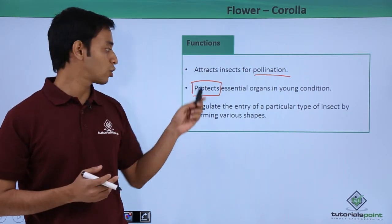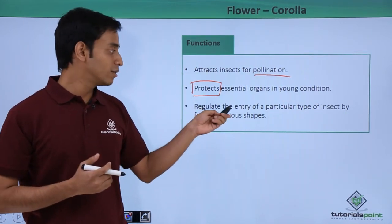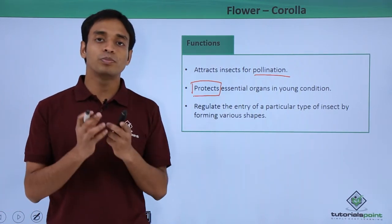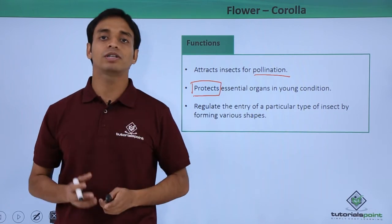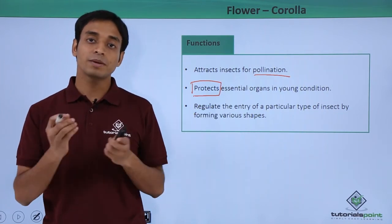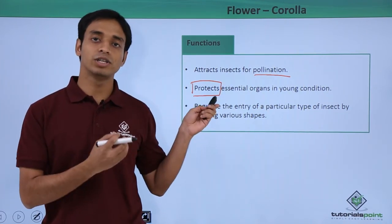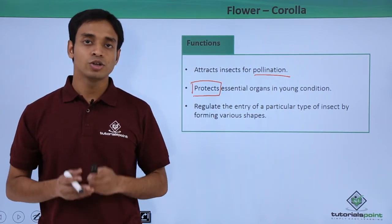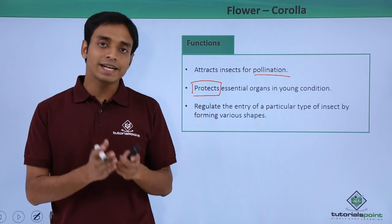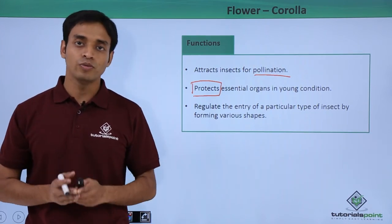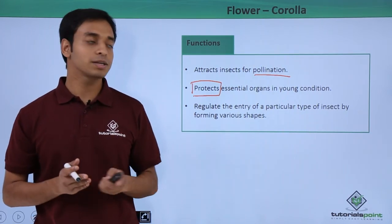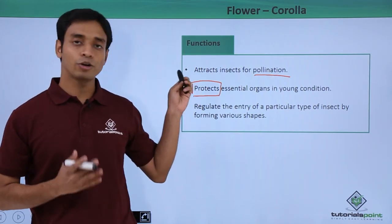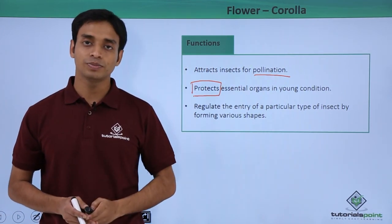These essential organs are protected by the petals or corolla specifically in the young condition, when the flower is very susceptible to damage. The corolla also regulates the entry of particular types of insects based on the various shapes of the petals — some insects can enter flowers of a particular shape and in turn aid in pollination. So in this video we have talked about corolla, the second important part of a typical flower, and its important functions. Thank you.